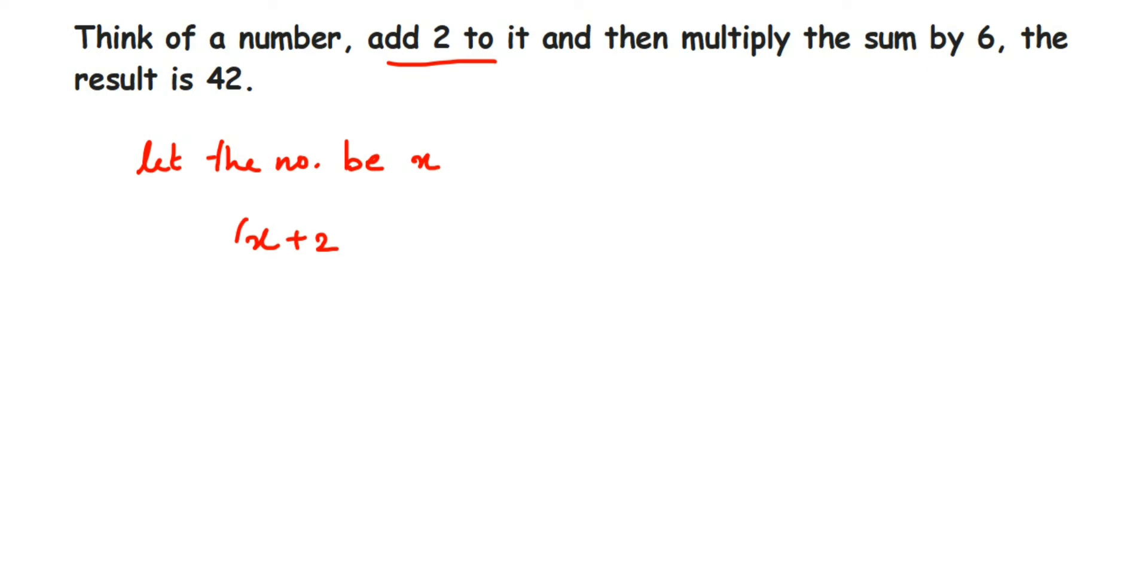So we're going to multiply this whole thing by 6, so 6 into x plus 2. Since we have not kept the multiplication sign over here, it is multiplication. You can put the multiplication sign or you can avoid it. So outside the bracket we have a 6, which means the 6 is getting multiplied with it. The result is 42, which means this whole thing when you solve it is equal to 42.